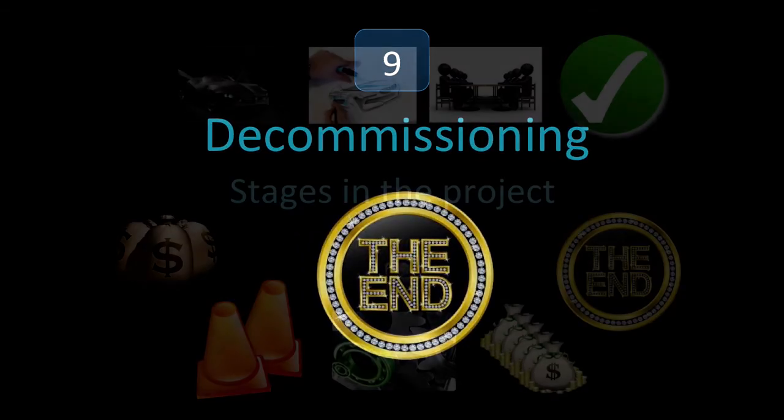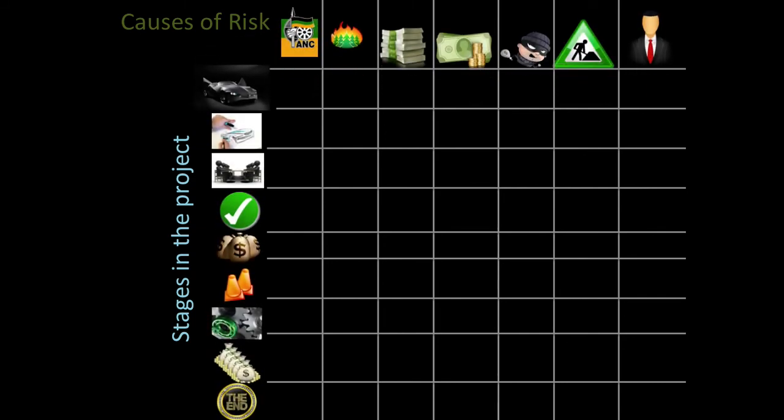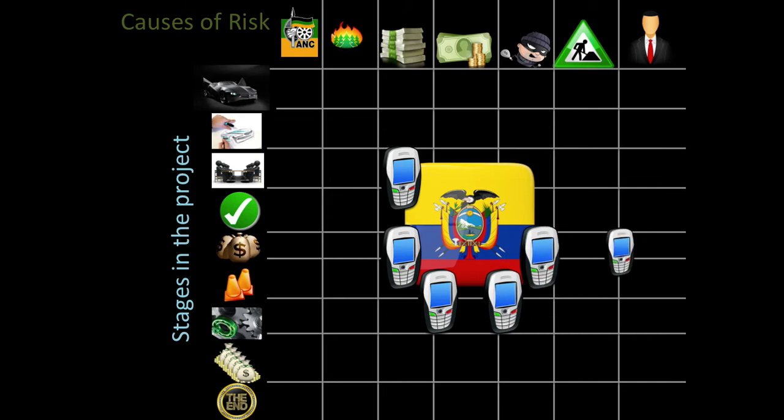Now what we can do is create our risk matrix from the causes of risk and the stages of the project. This can be a nice way to identify risks. With the example we did in class with Ecuador, the cell phone companies, you can now find some cool risks and link them all up.